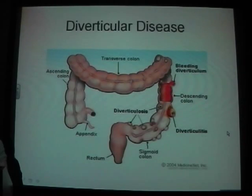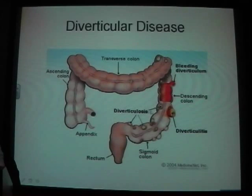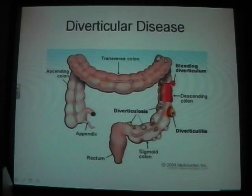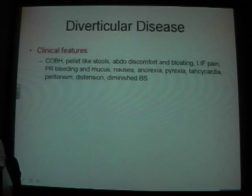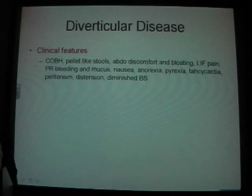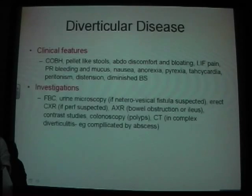Diverticulitis mainly occurs in the sigmoid colon. Clinical features include change of bowel habit, pellet-like stools, abdominal discomfort and bloating, PR bleeding, mucus, nausea, and anorexia.